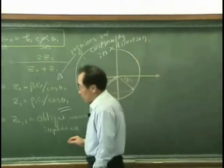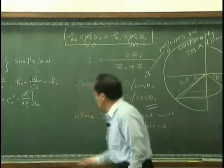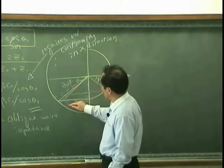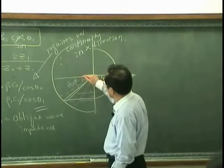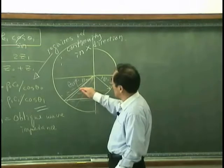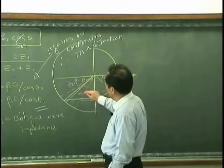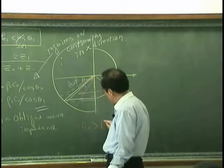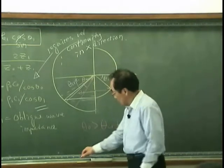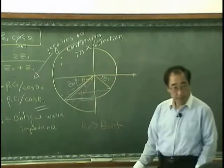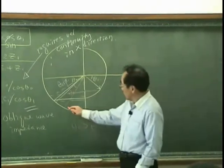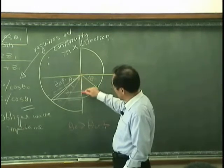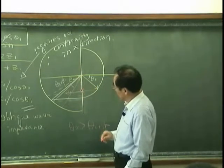And the question was, what if I have incident angle that is greater than theta critical? If theta 0 is greater than theta critical, what will happen? Then sine theta 0 is this length.